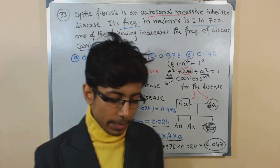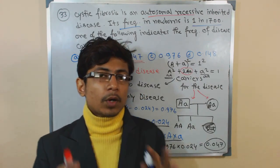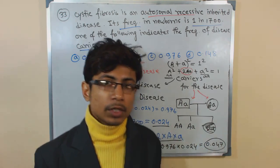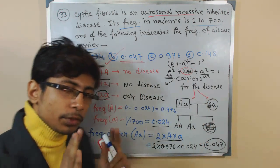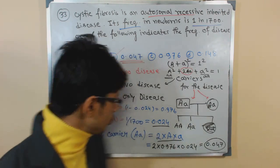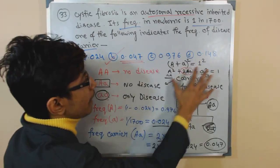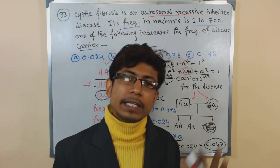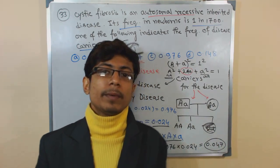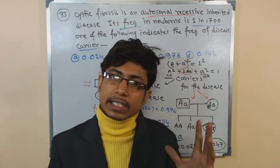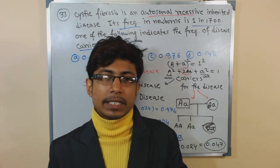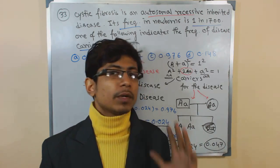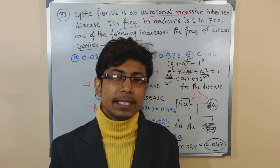This problem requires combining several areas of knowledge: how the disease progresses, what a carrier is, the Hardy-Weinberg equilibrium frequency values, and the math to calculate them. It tests analytical knowledge as well as mathematical reasoning. Try to solve these problems on your own — it will be very interesting once you solve one or two. Thank you.